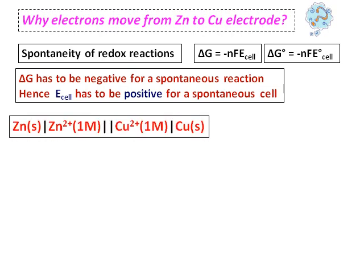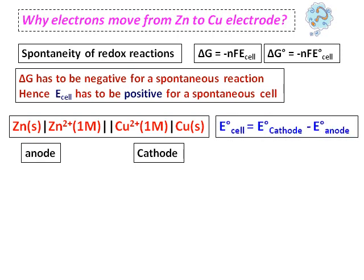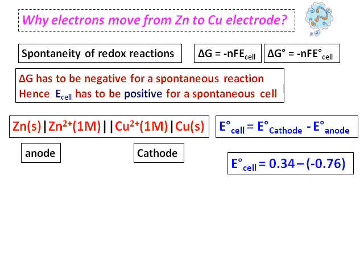Considering the zinc-copper cell — zinc/zinc ions as anode and copper ions/copper as cathode — E_cell = E_cathode − E_anode. From the reduction potential table, E° for the cathode (Cu²⁺/Cu) is +0.34 V, and E° for the anode (Zn²⁺/Zn) is −0.76 V. Substituting: E_cell = 0.34 − (−0.76) = 1.10 V, a positive value. Therefore, ΔG is negative and the reaction is spontaneous.